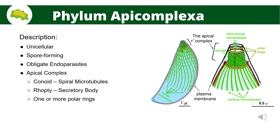The phylum Apicomplexa has a few key descriptions. Firstly, they are unicellular in their forms and also reproduce through the release of their spores. As for their parasitism, they are classified as obligate endoparasites, meaning they are unable to have a complete life cycle without finding a host, and they live inside said host. Apicomplexa receive their name through the special structure called the Apical Complex, which consists of different organelles essential for the invasion of the host cell in its life cycle.